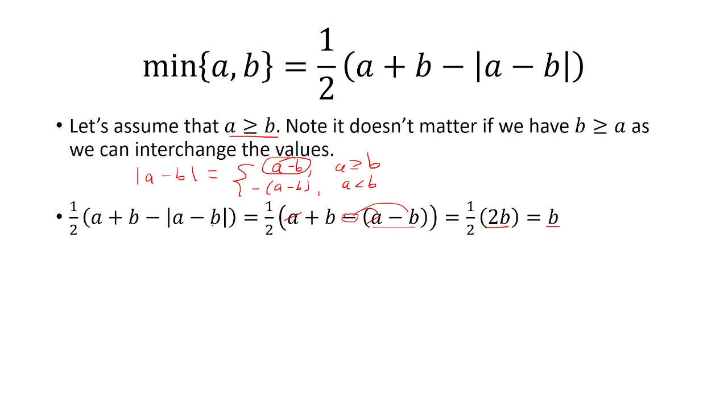So what we showed here is that the minimum of a and b is equal to b, as we assumed. And so this proves it.